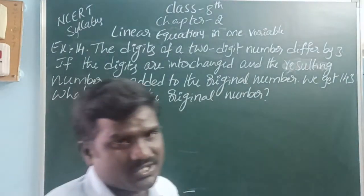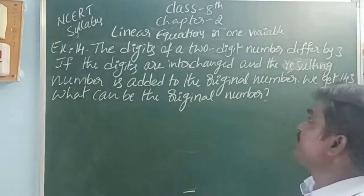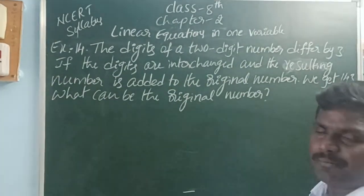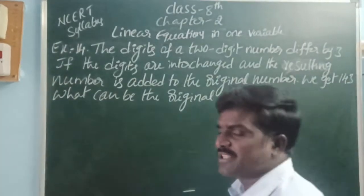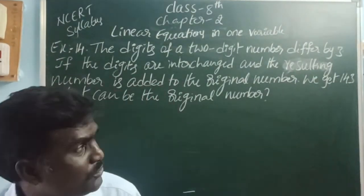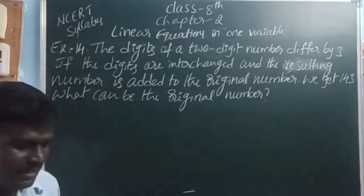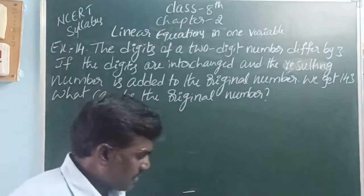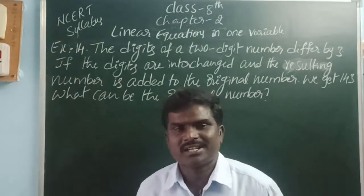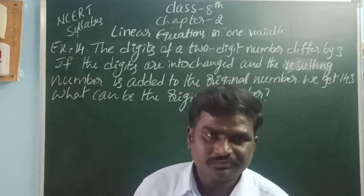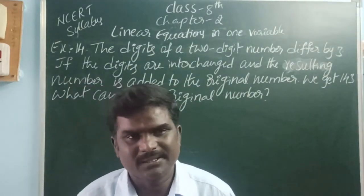First, let us understand the question. The number has two digits, and the difference between the two digits is 3. We don't know the digits, so let us take one digit as x.